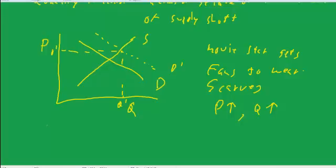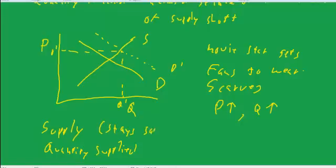We can talk about supply versus quantity supplied. Supply stays the same in this example—we have not shifted the supply curve. But the quantity supplied goes up due to the increase in demand. Just as there is a distinction between demand and quantity demanded, there's a distinction between supply and quantity supplied.